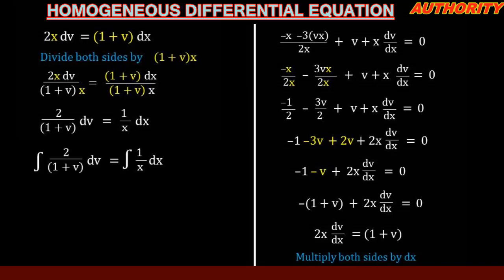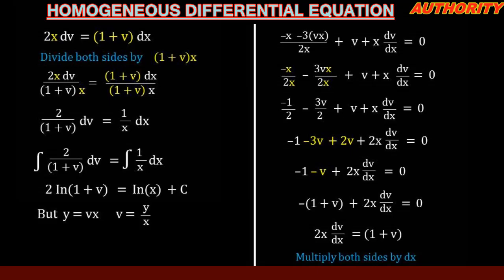Integrating both sides: the integral of 2/(1 + v) dv equals the integral of (1/x) dx. The left-hand side gives 2 ln|1 + v| and the right-hand side gives ln|x| + C. Since y = vx, making v the subject gives v = y/x. Substituting back: 2 ln|1 + y/x| equals ln|x| + C.